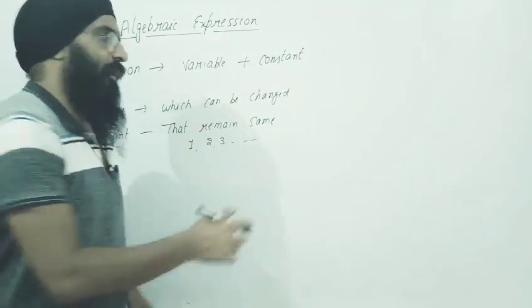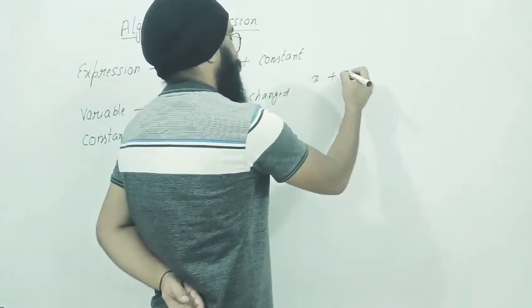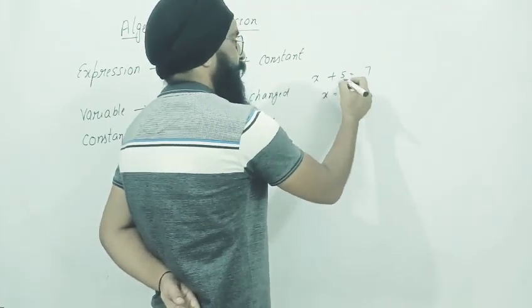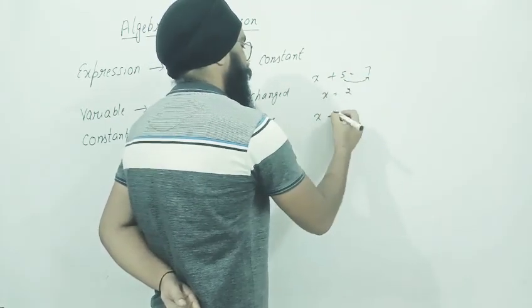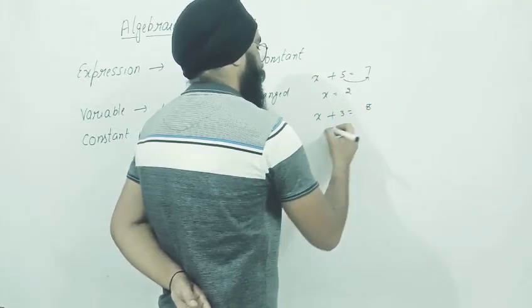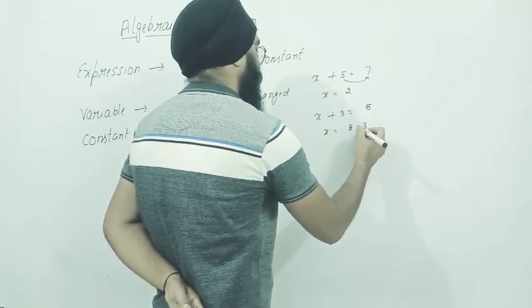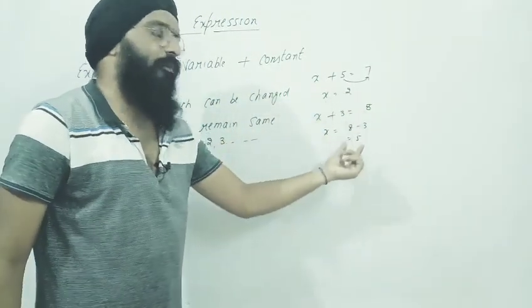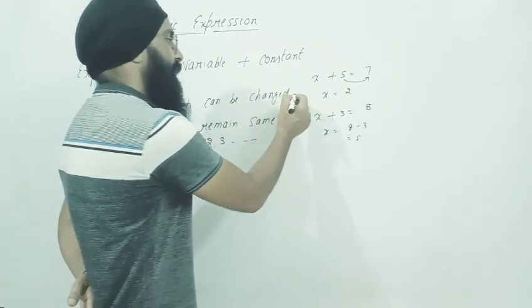Variables - when we solve questions like x plus 5 is equal to 7, the value of x will be 2. Same way if we solve x plus 3 is equal to 8, the value of x will be 8 minus 3, that is 5. See, the value of x is changing. First it was 2, now it's 5 - it's varying. That is a variable.